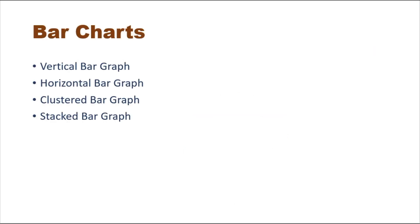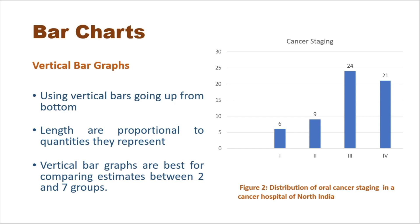Bar graphs can be vertical, horizontal, cluster, or stacked. Vertical bar graphs use vertical bars going upward; bar lengths are proportional to the quantities they represent. Vertical bar graphs are best for comparing estimates between two and seven groups — this is a suggestion, not a strict rule — the idea is the graph should be clearly visual. Figure two represents distribution of oral cancer staging: stage one has six patients, stage two nine, stage three 24, and stage four 21.